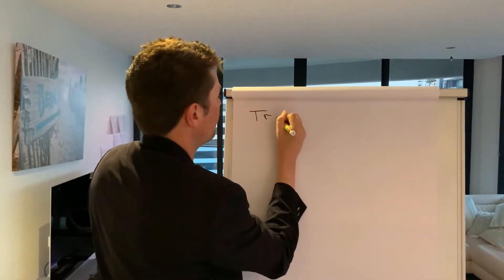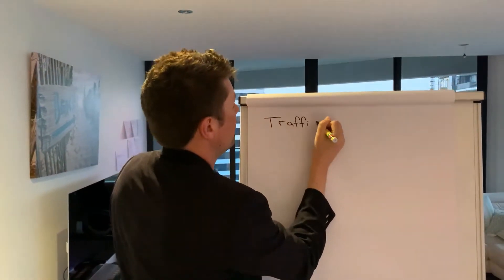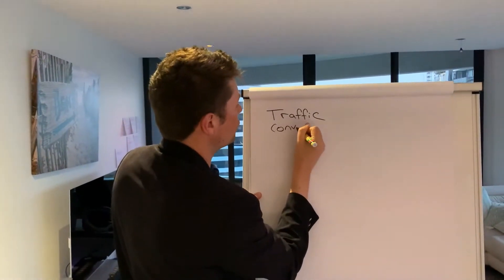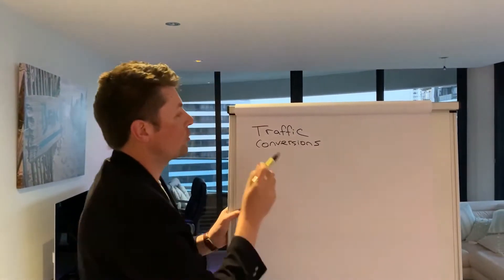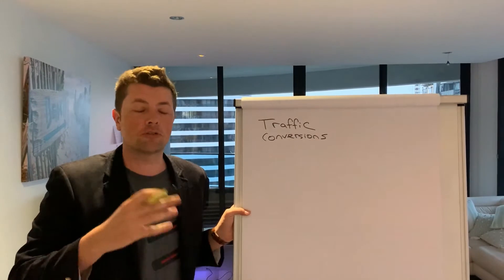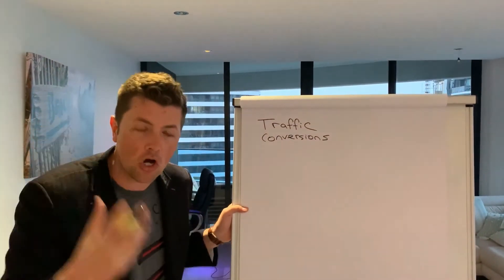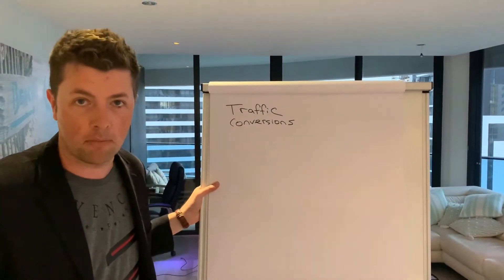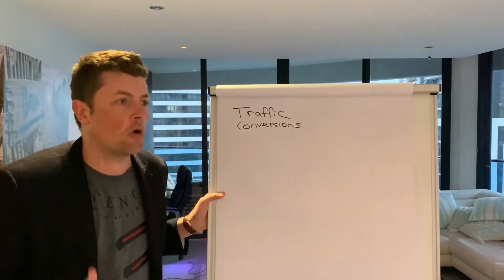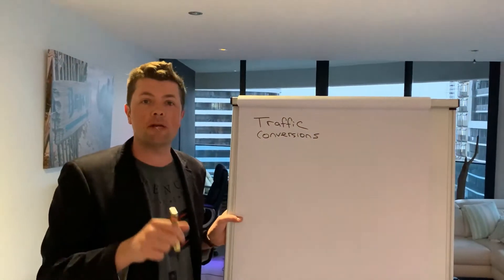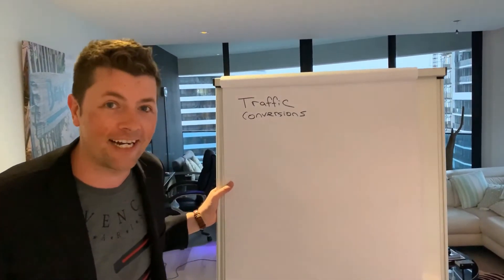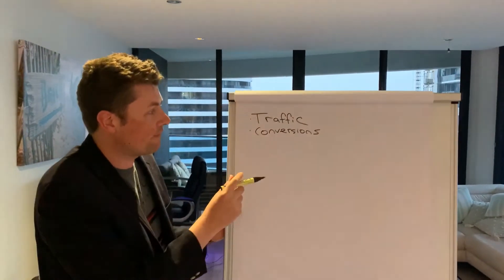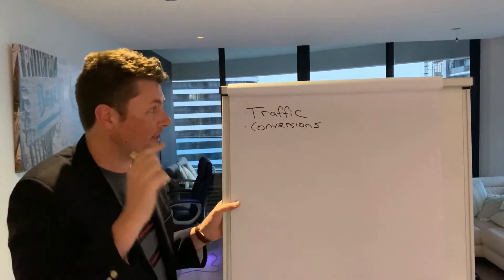Number one is traffic. There are two issues with potentially your product: traffic and conversions. These are two things you need to understand. Traffic means if you're not getting enough eyeballs looking at your listing, you have a traffic problem. You might be pulling your hair out wondering why your product isn't selling — it's because not enough people know about your product. You can't sell a secret.